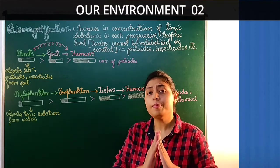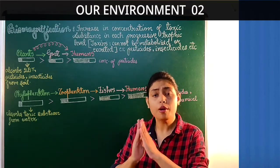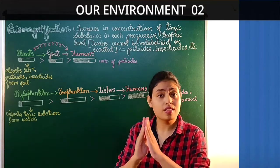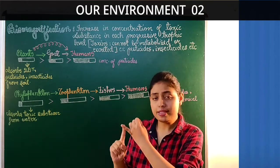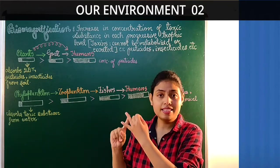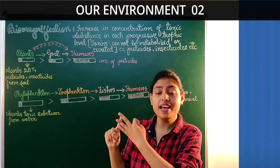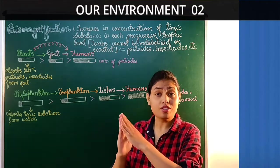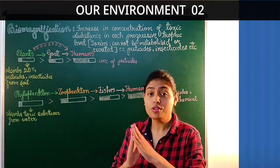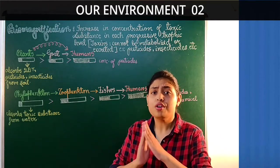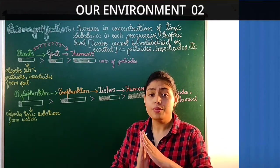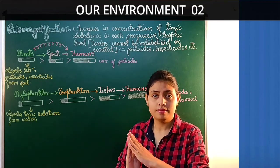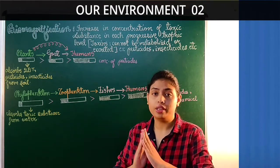A few examples of non-biodegradable chemicals or toxic substances are pesticide, insecticide, DDT, etc. Industrial waste also contains lots of chemicals which cannot be biodegraded, for example mercury.